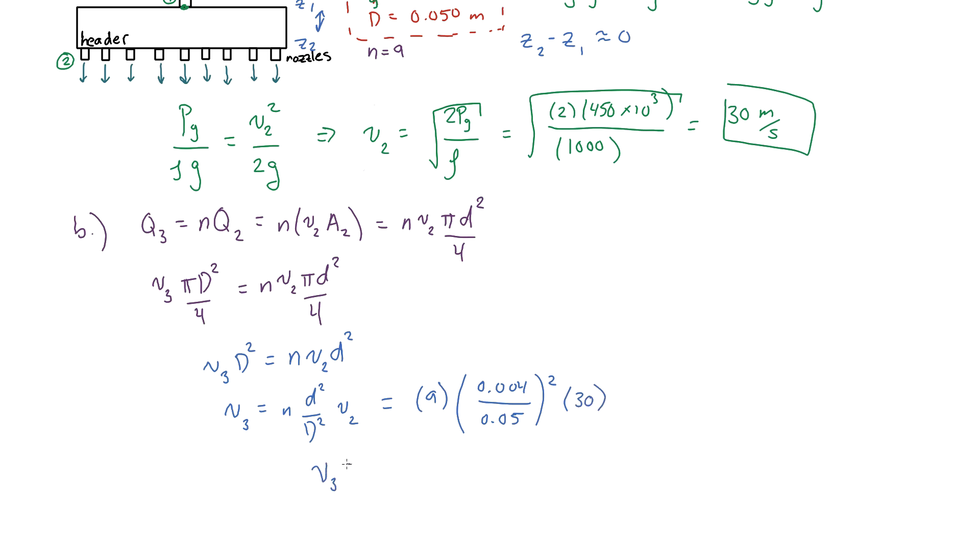So once you plug all this stuff into your calculator, what you get is 1.728 meters per second. And that is your answer for part B.